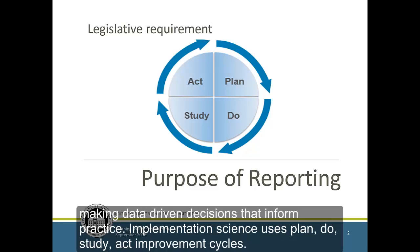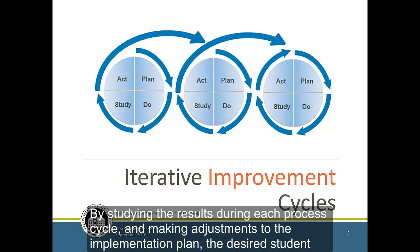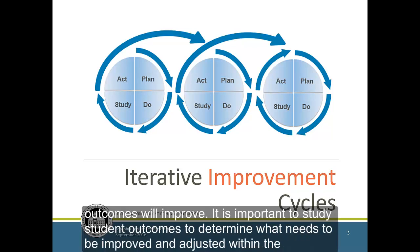Implementation science uses Plan, Do, Study, Act improvement cycles. Over the course of three process cycles, desired outcomes can increase up to 80%. By studying the results during each process cycle and making adjustments to the implementation plan, the desired student outcomes will improve.